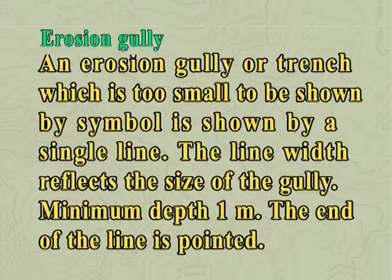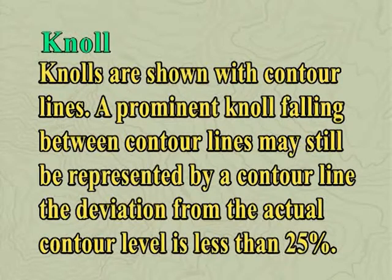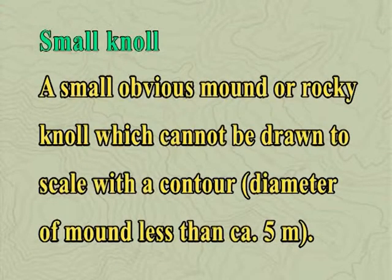An erosion gully or trench which is too small to be shown by a contour symbol — the line width reflects the size of the gully, minimum depth 1 metre and the end of the line is pointed. A small erosion gully has a minimum depth of 0.5 metres. Knolls are shown with contour lines. A prominent knoll falling between contour lines may still be represented by a contour line if the deviation from the actual contour level is less than 25 percent. A small obvious mound or rocky knoll which cannot be drawn to scale with a contour has a diameter of less than 0.5 metres, and the height of the knoll should be a minimum of 1 metre from the surrounding ground.